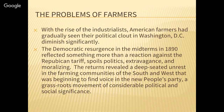With the rise of the industrialists, American farmers gradually saw their political clout in Washington diminished significantly. The democratic resurgence in midterms in 1890 reflected a reaction against the tariff, spoils politics, extravagance, and moralizing. The returns revealed a deep-seated unrest in the farming communities of the South and the West that was beginning to find voice in the new People's Party — a grassroots movement of considerable political and social significance. As early as 1890, you start to see trouble brewing as farmers' frustrations grew.